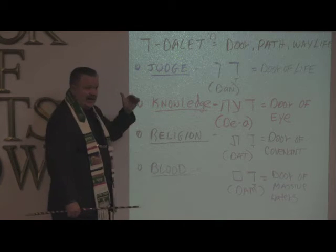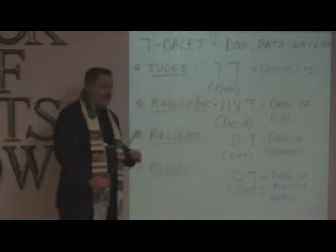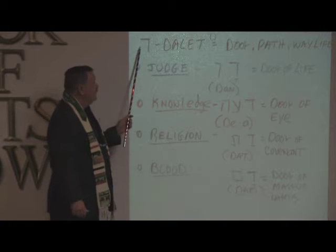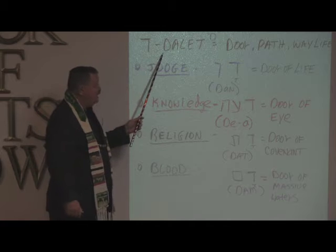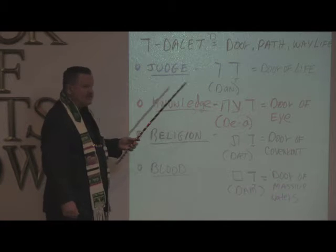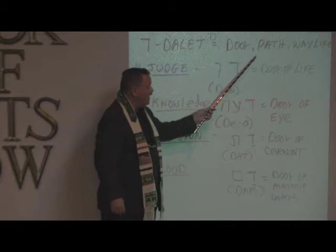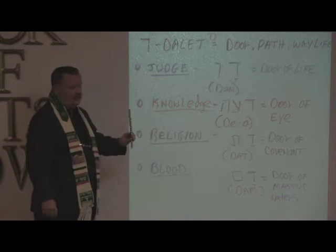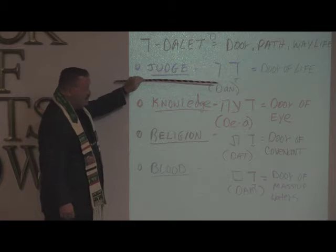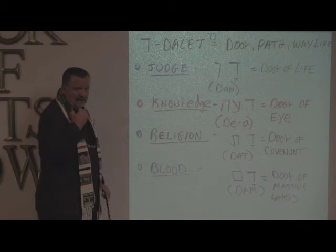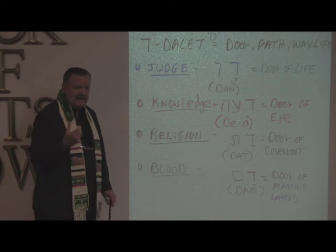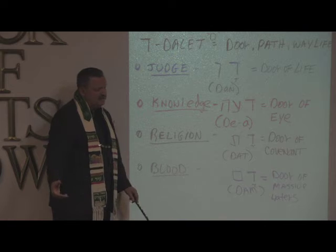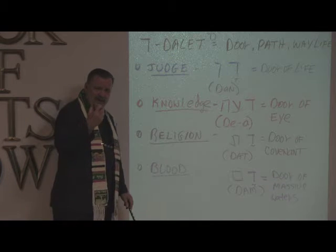The Hebrew alphabet has 22 letters, and the letter we're looking at now is Dalet. This actually represents part of a doorway and would have the D sound — Dalet. The word picture for this is door, path, or way of life. We're going to look at some Biblical words that show us how the Bible writers use this letter, going back into the original writings to give meaning based on Biblical expressions, not just English idioms.